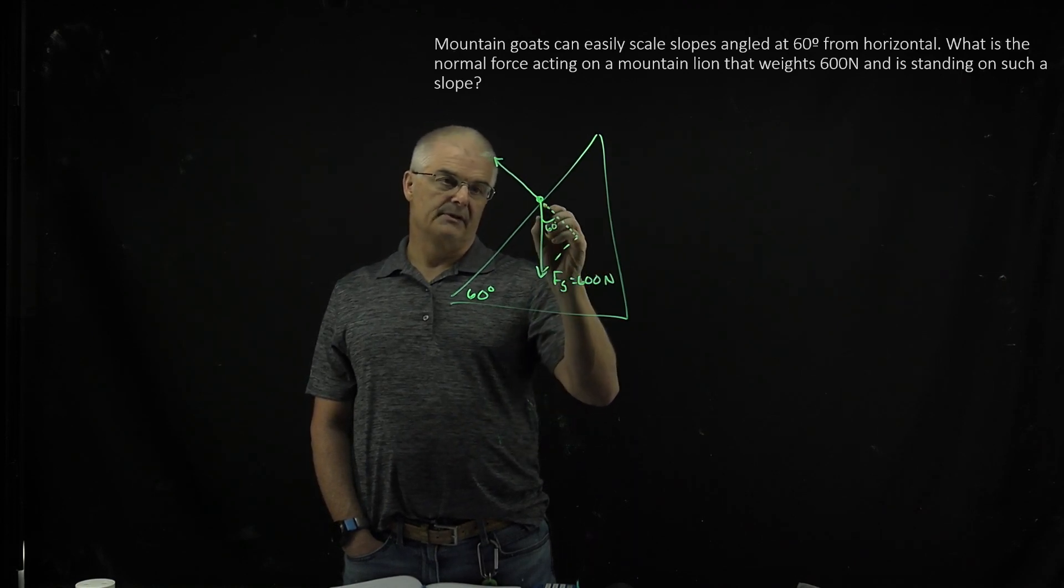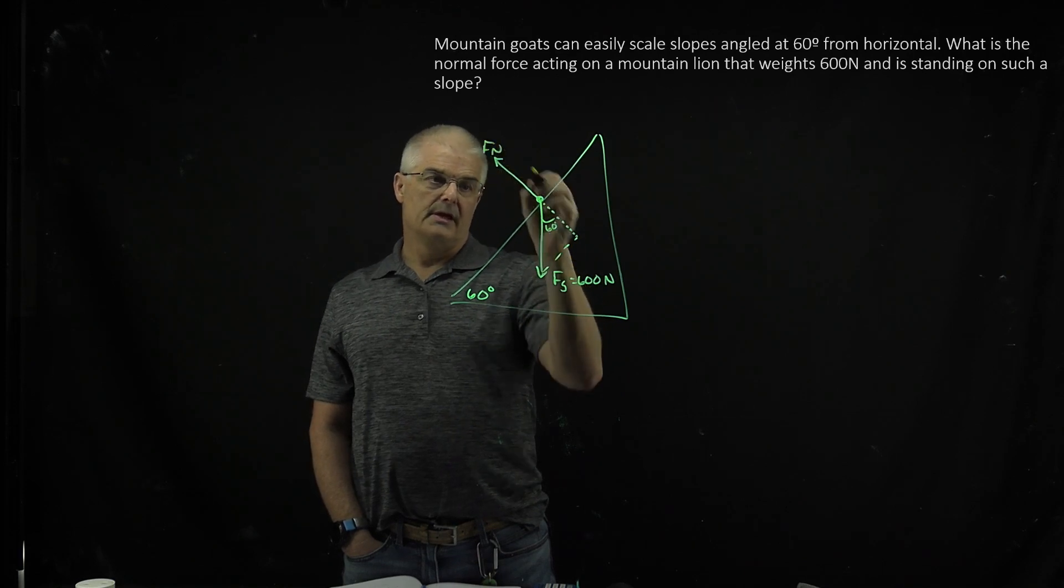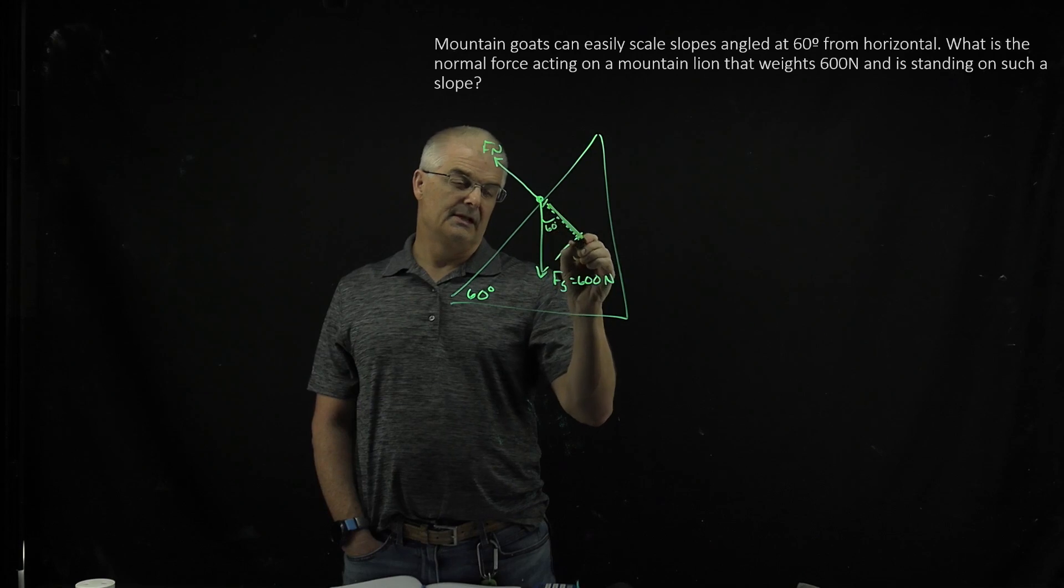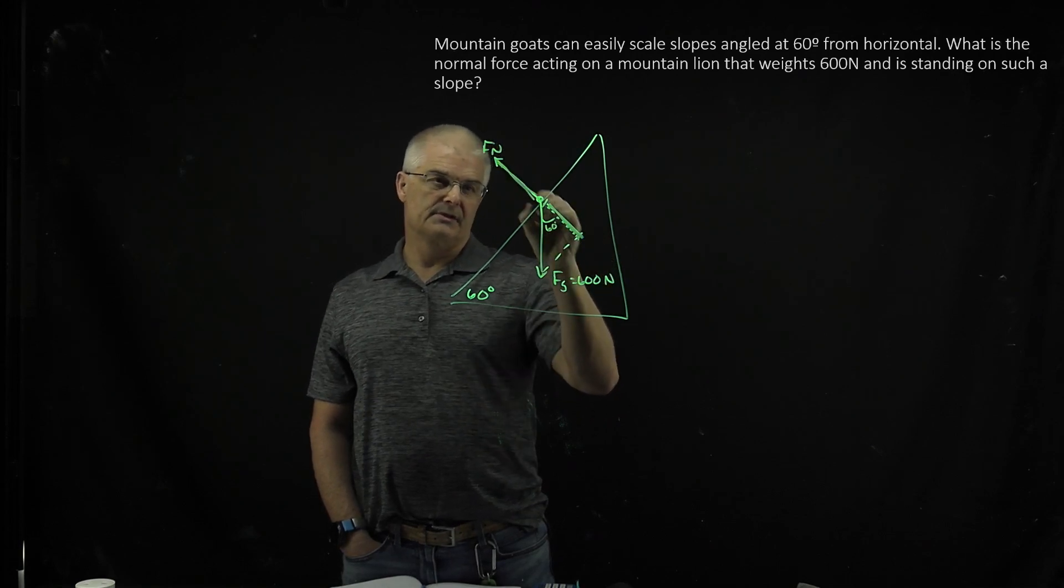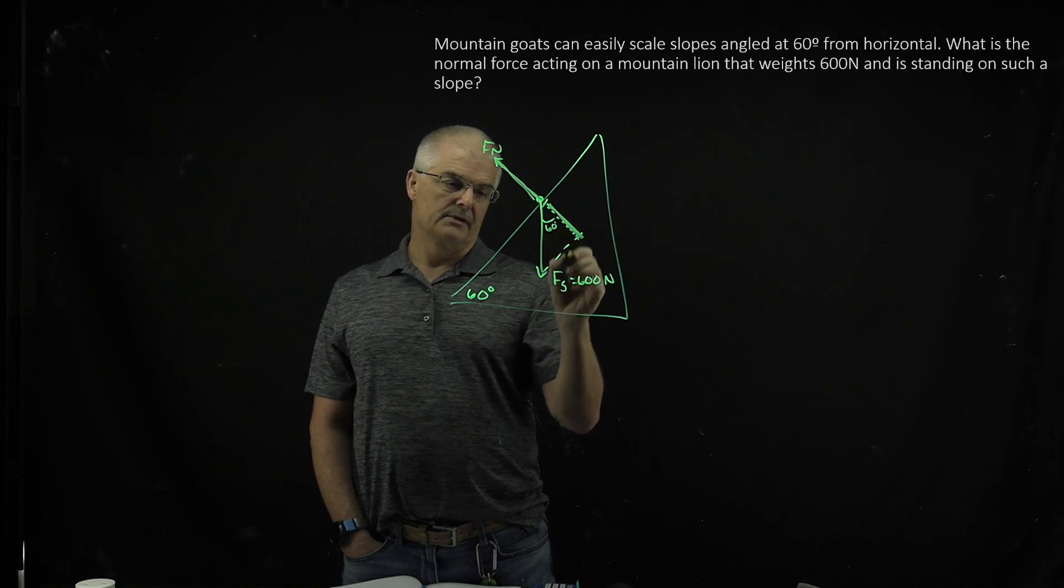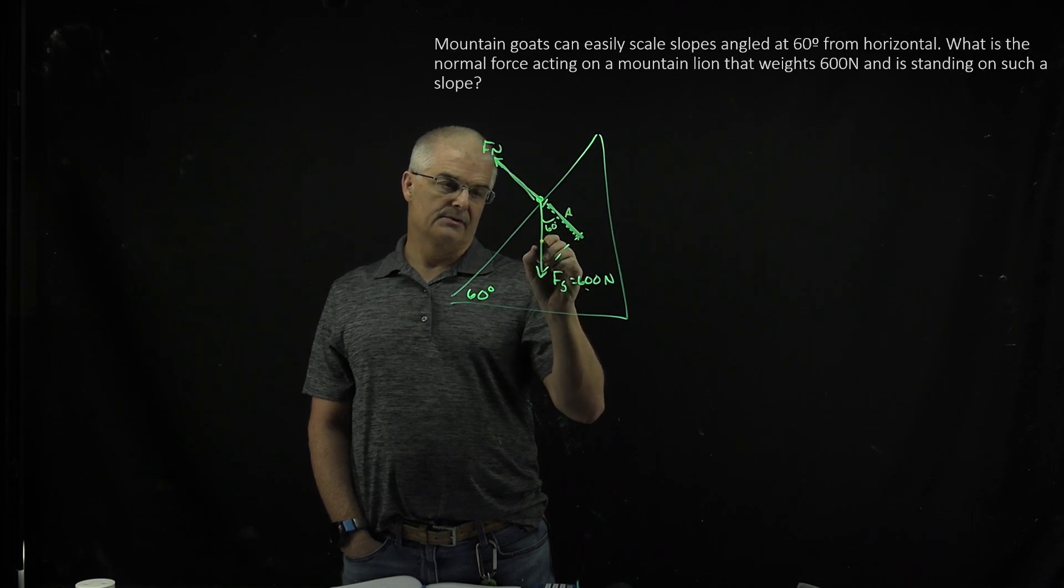And so we're trying to basically find, so this is the normal force, right? And so you've got this force right here, or this line of the triangle is equal to this line right here. So you're going to use the cosine, right? Because, yeah, this is 60, this is the adjacent angle. And the hypotenuse is the gravity, right? So this is 600.